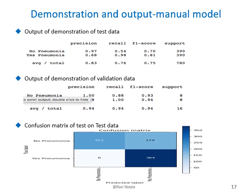This slide shows the demonstration output of the manually developed model. For all models in this project, two tests were performed: one using the test data which was also used during training, and another using the validation data, which is new data the model has never seen. The predictions are 0.83 for the test data and 0.94 for the validation data. The confusion matrix of the test data is also shown here.